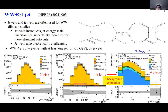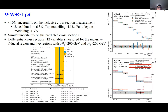Even in the zero b-jet signal region, the t-tbar background is still a factor of two larger than the signal. The measurement shows an overall 10% uncertainty on the inclusive cross-section, with main contributions from jet calibration, t-tbar background modeling, and fake backgrounds. Several theoretical calculations are compared, which also have uncertainties around 10% or larger.